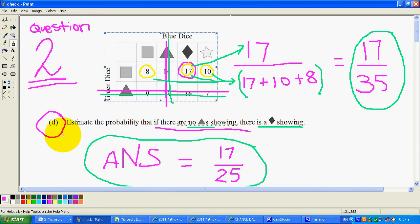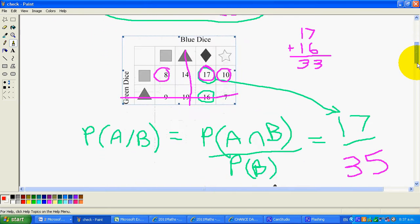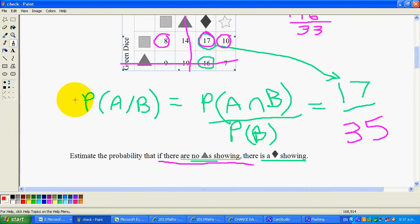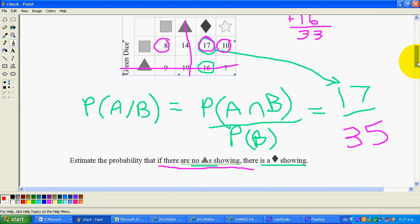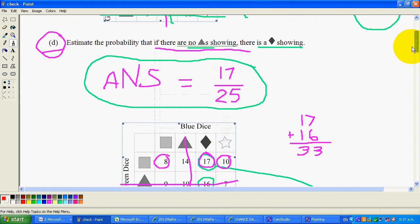Alright, question 2d. Now I've double checked this with a couple of year 13 stats students, and these year 13 stats students use this fancy little formula here and they came up with 17 out of 35.